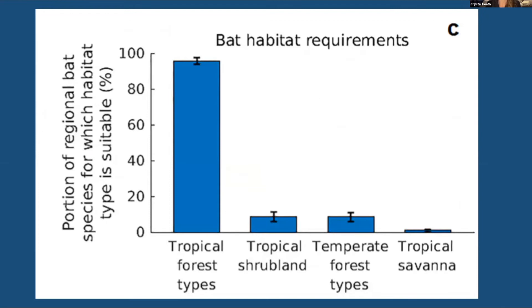The study looked at where bats could live and the effects climate change had on those populations. As a result of climate change, there was a shift in the distribution of natural biomes — populations of plants and animals shaped by shared physical climate. Their data showed a shift from tropical shrublands to tropical savannas and deciduous woodland over the past century, driven by higher CO2 levels, increased temperatures, altered precipitation, and decreased cloud cover.